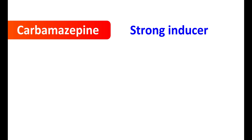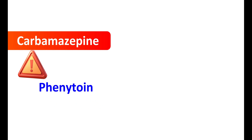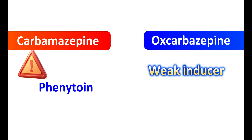Regarding drug interactions: carbamazepine is a strong inducer of cytochrome P450 enzymes. Due to the induction of this enzyme, it can affect the metabolism of many medications leading to their loss of efficacy. It can increase the metabolism of oral contraceptives, resulting in loss of contraception. It can also increase the metabolism of warfarin and other anticoagulants, leading to an increased risk of clotting. Antiepileptics like phenytoin can also show strong drug interactions with carbamazepine. On the other hand, oxcarbazepine is a weak inducer of cytochrome P450 enzymes, so at therapeutic doses it has few drug interactions compared with carbamazepine.